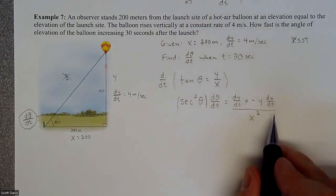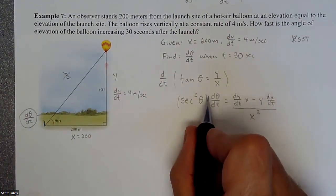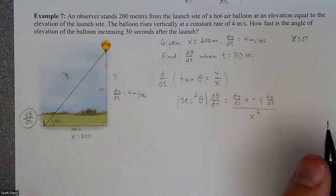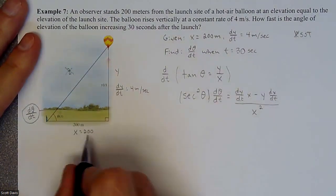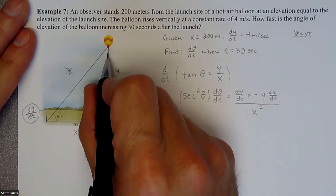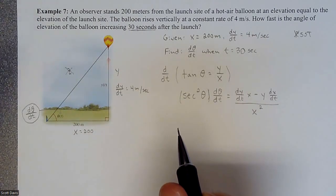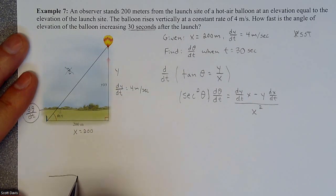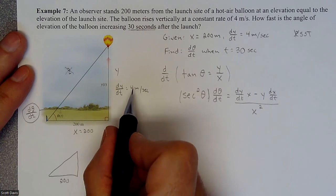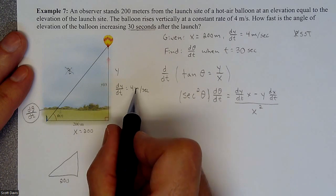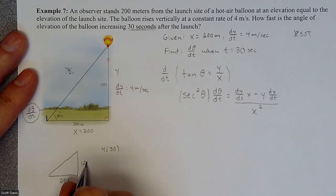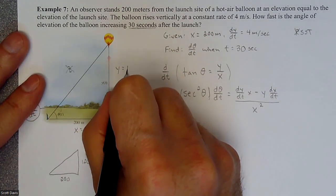We need to figure out all the pieces. We know x is 200. For y, since the balloon rises at 4 meters per second for 30 seconds, the height at 30 seconds is 120 meters. The rate dx/dt is zero because the observer isn't moving. So dy/dt is 4 meters per second, and we have every piece except d theta dt.